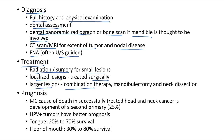For larger lesions, combination therapy with mandiblectomy and neck dissection is needed. The most common cause of death in successfully treated oral cavity cancer is development of a second primary, occurring in 25% of cases. HPV-positive tumors have a better prognosis. CA tongue: 20–70% survival; CA floor of mouth: 30–80% survival.